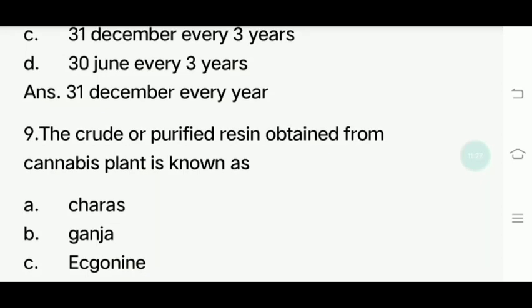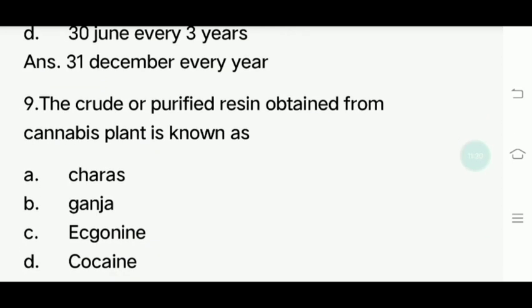Ninth question: The crude or purified resin obtained from cannabis plant is known as? Options: Charas, Ganja, Egnonine, Cocaine. Answer is Charas.